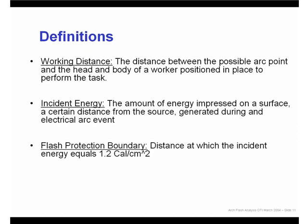We also define the incident energy, which is the amount of energy impressed on a surface at a certain distance from the source generated during an electrical arc event. ETAP will automatically determine the incident energy at different working distances or for particular tasks with predetermined working distances. The flash protection boundary is defined as the distance at which the incident energy equals 1.2 calories per centimeter squared, which is the onset of a second degree burn.